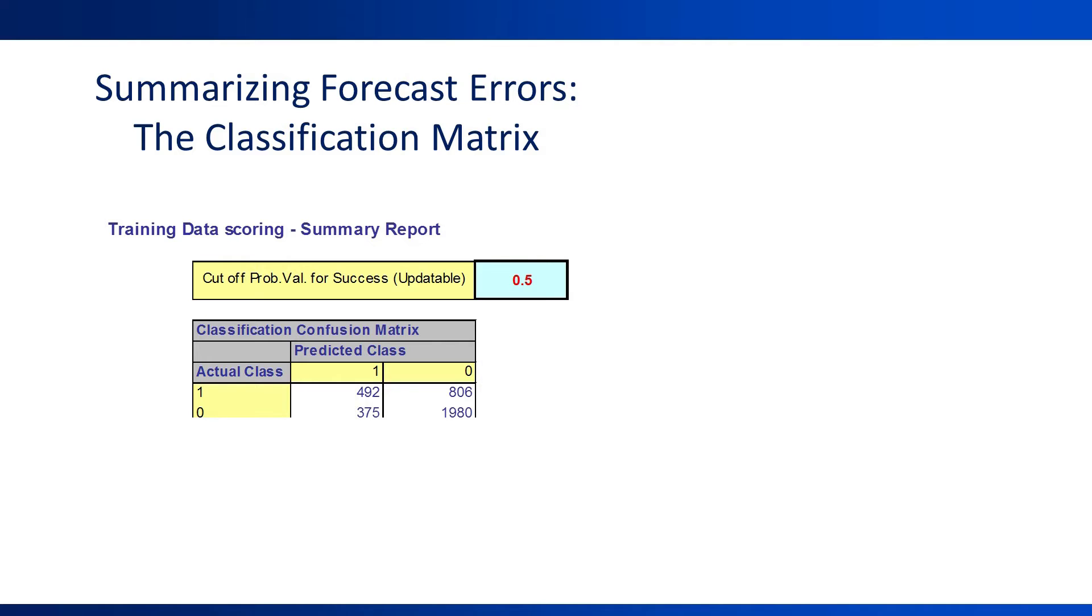806 days were incorrectly forecasted as non-rain, but actually it did rain on those days. And 375 days were incorrectly forecasted as rainy, but it did not rain on those days.